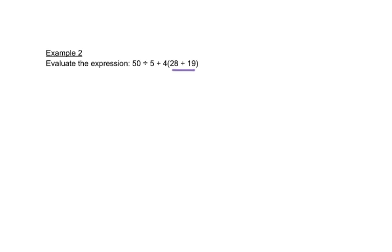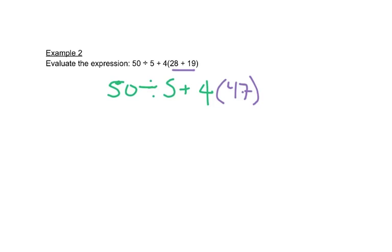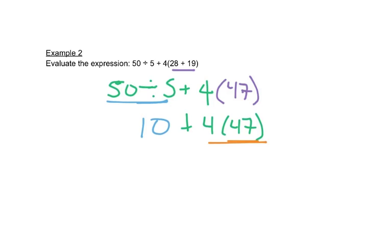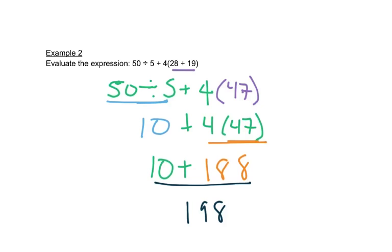In this problem we have parentheses, so we do that first, copying everything else and changing one thing at a time. 28 plus 19 is 47. Now we look for multiplication and division — the first thing is a division, so 50 divided by 5 is 10, copying everything else. Then there's a multiplication: 4 times 47 is 188. Finally, 10 plus 188 gives us 198 as our answer.